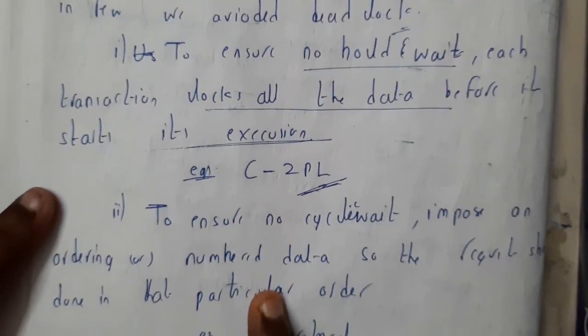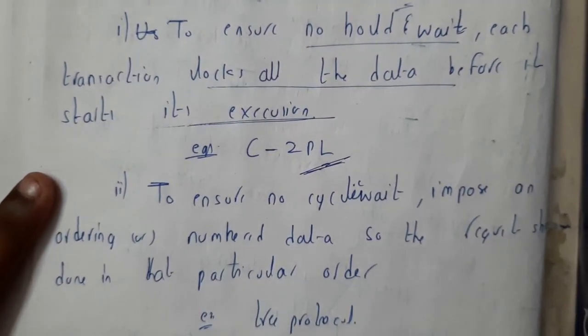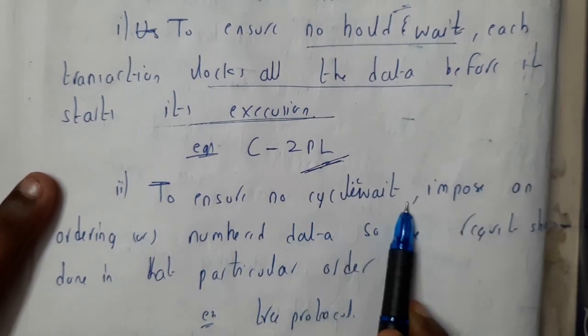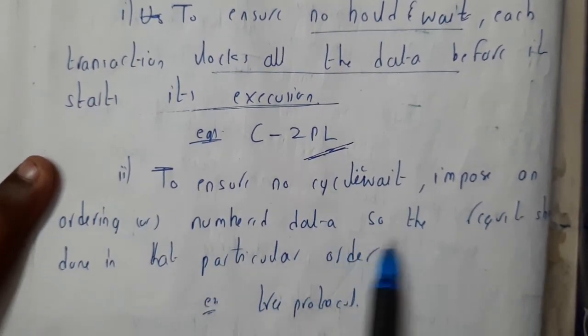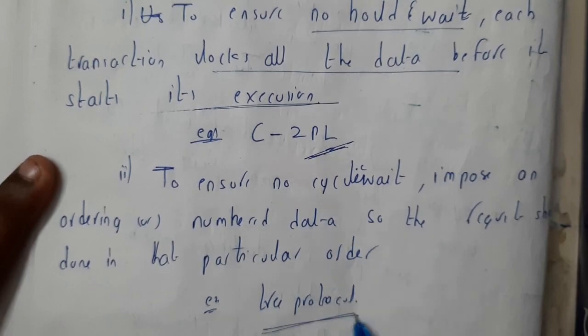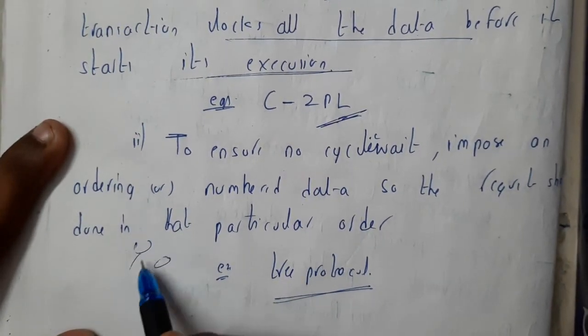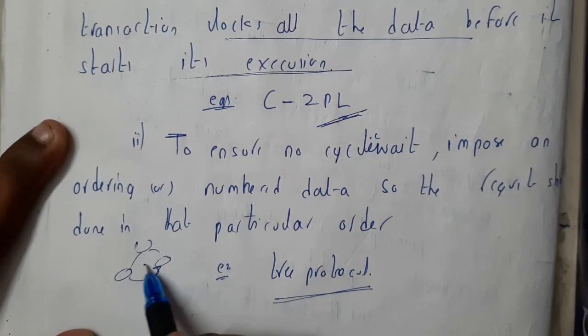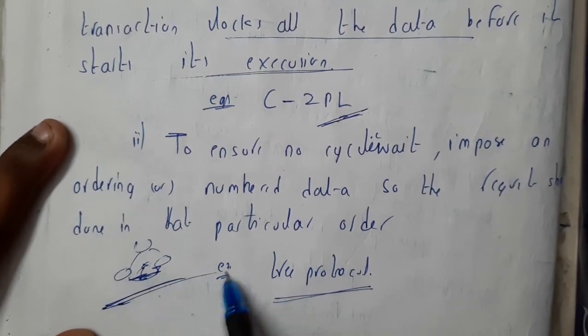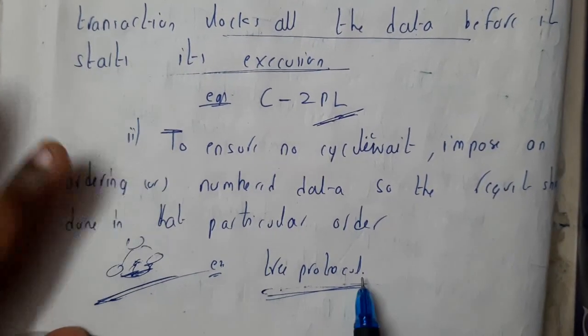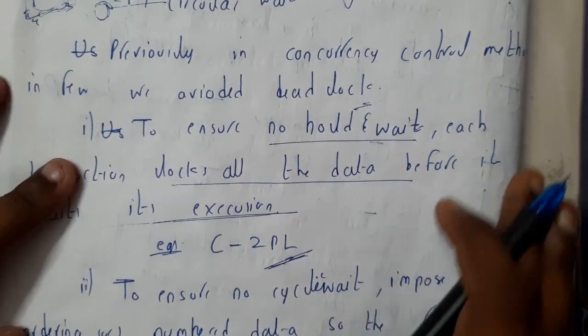Similarly, to ensure no cyclic wait, we impose ordering or non-ordering numbers. We have gone through tree protocol. In tree protocol, we told there should be no cycles because cycles cause deadlock. These are the two things we already implemented using concurrency control.